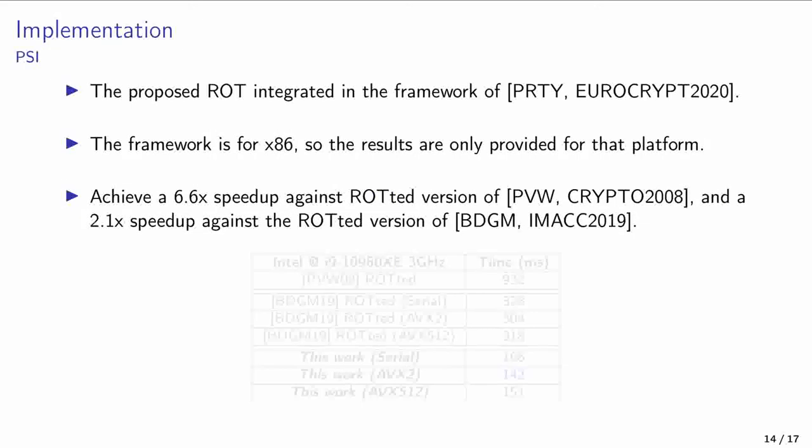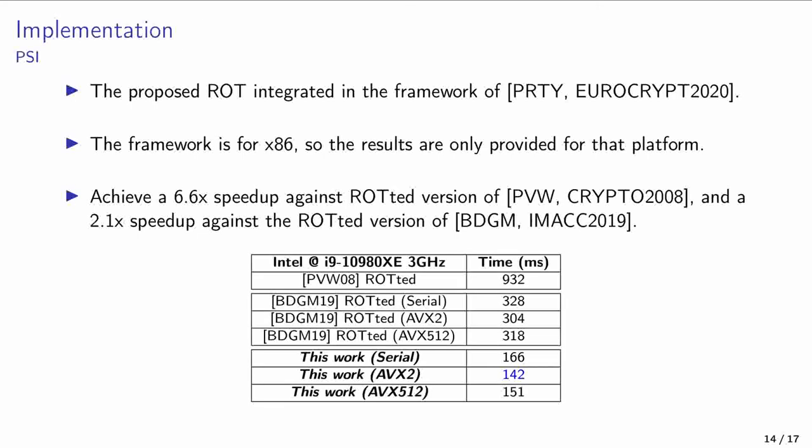As discussed before, we integrated our random OT protocol in a state-of-the-art open-source private set intersection framework. Since the framework only supported x86 architectures, our results are limited to that platform. Our goal here was to show that our random OT proposal was significant even for the real world and the use case for the private set intersection was selected for its many direct applications. In the end, we achieved very substantial improvements in terms of speed, while our memory drawback became negligible when considering the requirements of the entire private set intersection protocol.